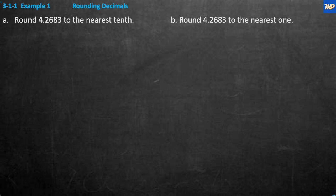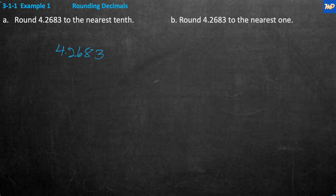Problem A says: round 4.2683 to the nearest tenth. So it's 4.2683 to the nearest tenth. This review assumes we all know the names of places — the 2 is in the tenths place, the 6 is hundredths, the 8 is thousandths, and the 3 is in the ten-thousandths. The 4 is in the ones place. They want us to round to the nearest tenth — is the 0.2 closer to 0.3 or closer to 0.2 based on the entire number?